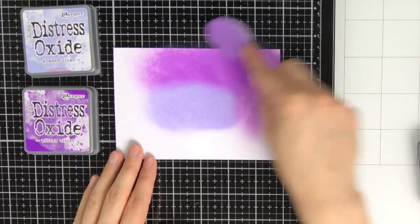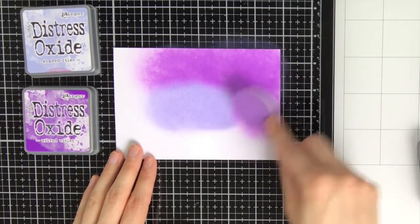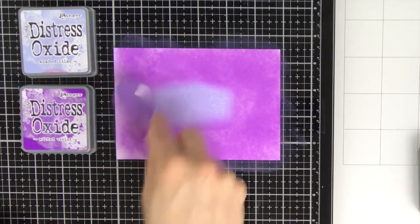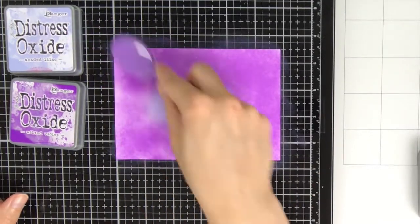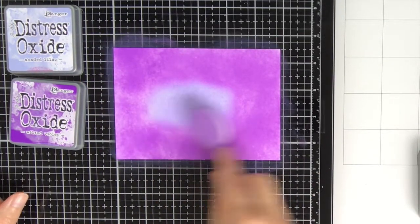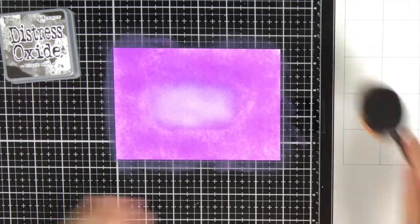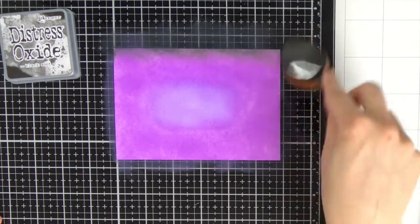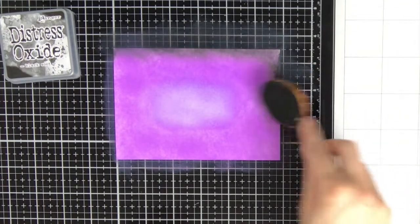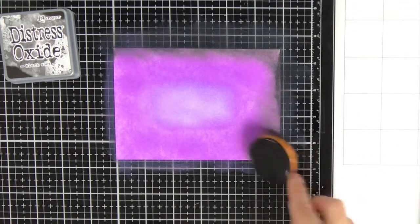In the centre I'm going to use the Distress Oxide Ink Shaded Lilac, and all the way around it I am applying the wilted violet. When I do ink blending I always like to use the Tailored Expressions Blender Brushes. I really love these brushes, they are nice and soft, and they really make applying the ink and blending so much easier.